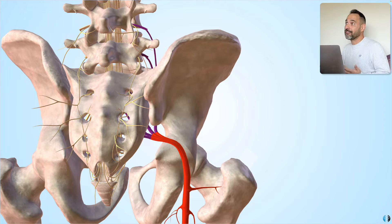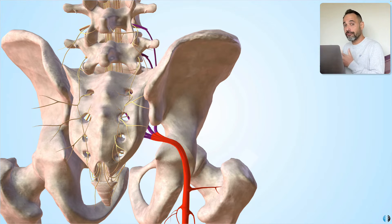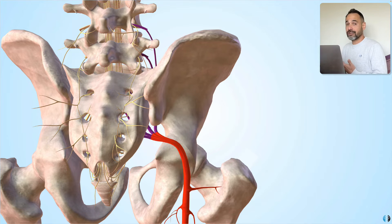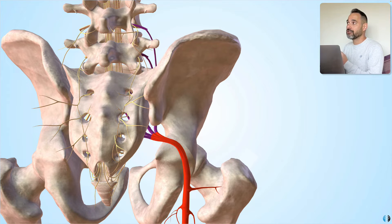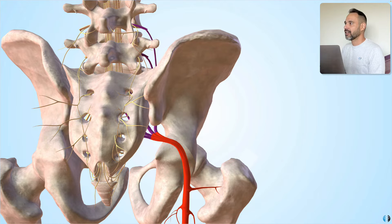For example, if your patient has a disc herniation at the L4-L5 or L5-S1 level, that can naturally compress one of those nerve roots and irritate the sciatic nerve.